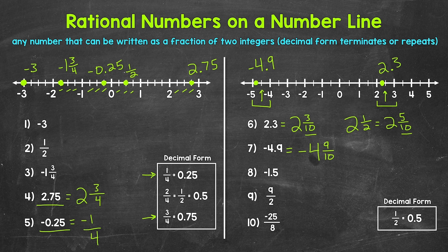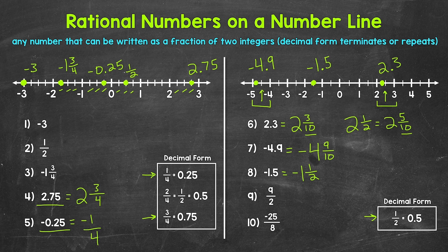Moving on to number eight, we have negative one and five tenths, which is negative one and a half — since five tenths equals one half. This is to the left of zero, between negative one and negative two, and it lands exactly on the half. So this is negative one and a half, or negative 1.5 in decimal form.